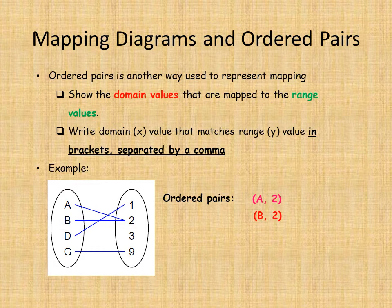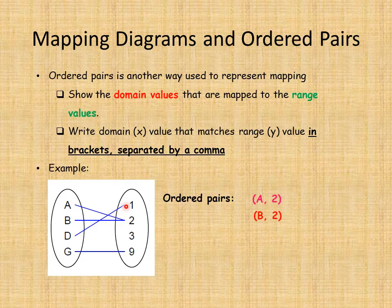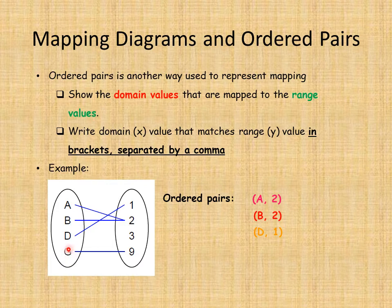The third element: the arrow from d is pointing to one, so the third ordered pair is (d, 1). And the final ordered pair — g is matched up to nine, so we have (g, 9).